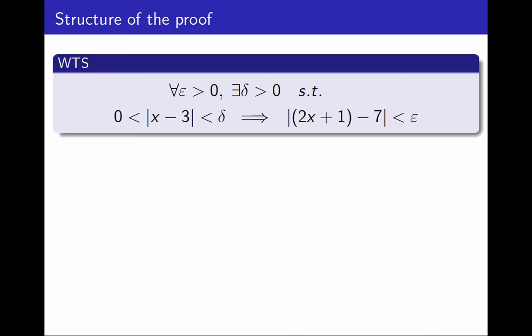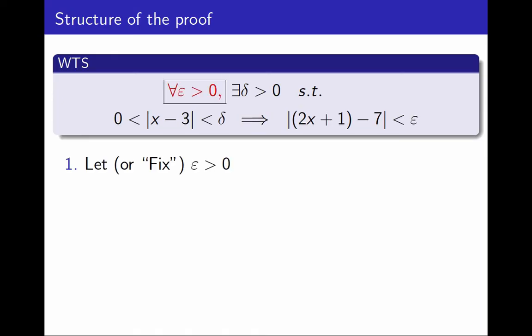First, I need to prove that for every positive ε, something. So I will begin the proof by fixing an arbitrary value of ε positive. Arbitrary, because I need this proof to work for all values of ε, so I don't get to choose ε. I cannot put any constraints on it.